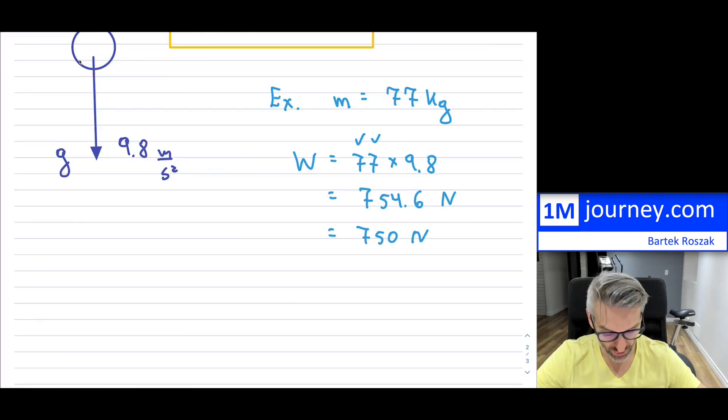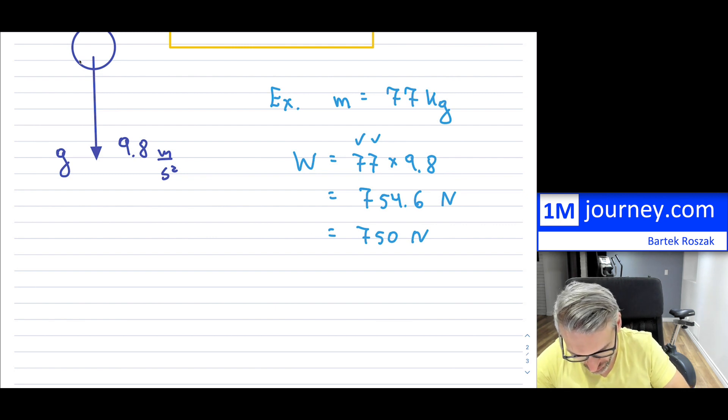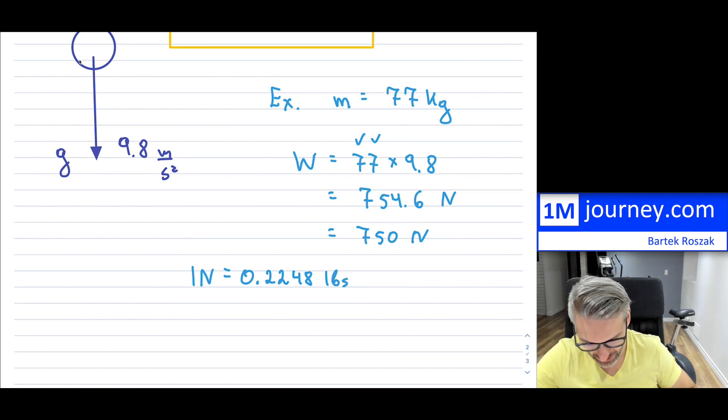Now if you wanted to convert, so for example from newtons back to pounds, and you have that conversion ratio, so I recall one newton is equal to 0.2248 pounds approximately, so give or take. So if you do have that, you can certainly use the unit conversions.